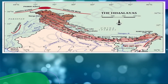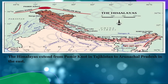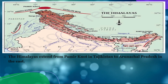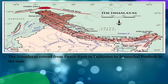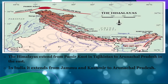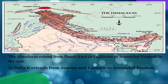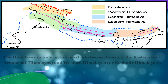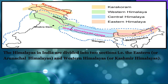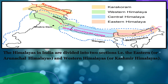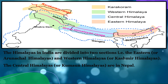The Himalayas in Hindi means the abode of snow. The Himalayas extend from the Pamir Knot in Tajikistan to Arunachal Pradesh in the east. In India, they extend from Jammu and Kashmir to Arunachal Pradesh. The Himalayas in India are divided into two sections: the eastern or the Arunachal Himalayas, and the western Himalayas or the Kashmir Himalayas. The central Himalayas or the Kumaon Himalayas are in Nepal.